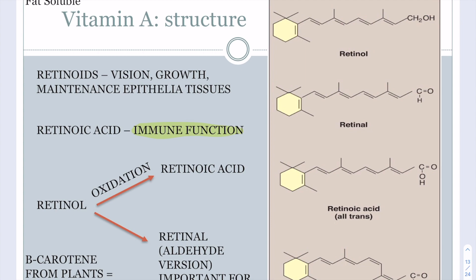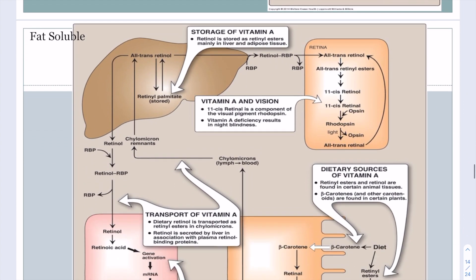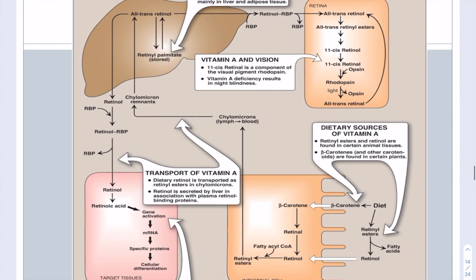Beta-carotene can be obtained from plants and is important for eye health. From beta-carotene you can get two molecules of retinal. Retinal is the version used for eyesight.